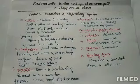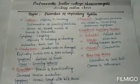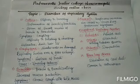Asthma is caused due to the inflammation of bronchi and bronchioles. It is characterized by the spasm of smooth muscles present in the walls of bronchi and bronchioles.